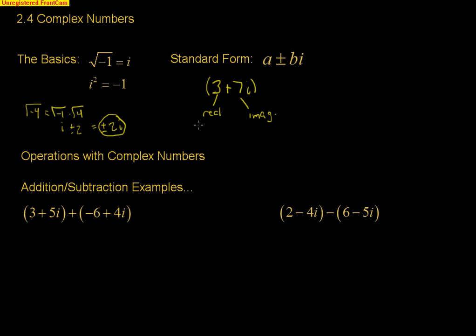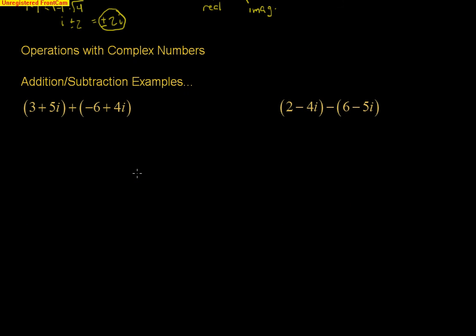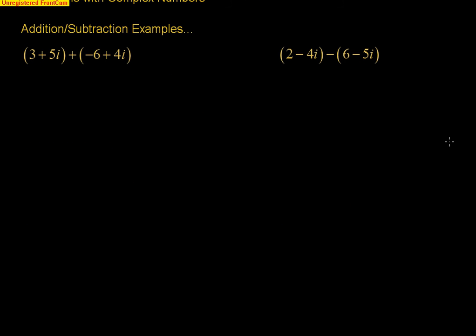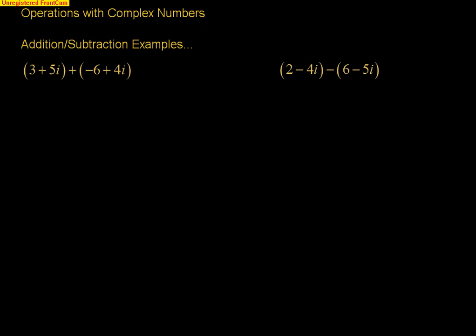So, just recognizing the parts, because you're going to just be combining like terms here when we talk about some addition and subtraction examples. So, looking at those right here, I've got some operations here. We just have basically 3 plus 5i, that complex number, and we're adding negative 6 plus 4i, that complex number.